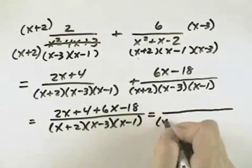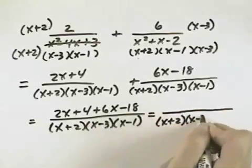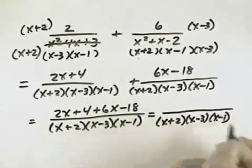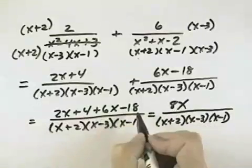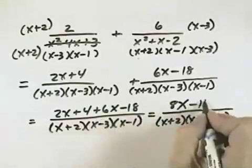Simplifying still over our common denominator, x plus 2, times x minus 3, times x minus 1. We have 2x plus 6x is 8x, 4 minus 18 is negative 14.